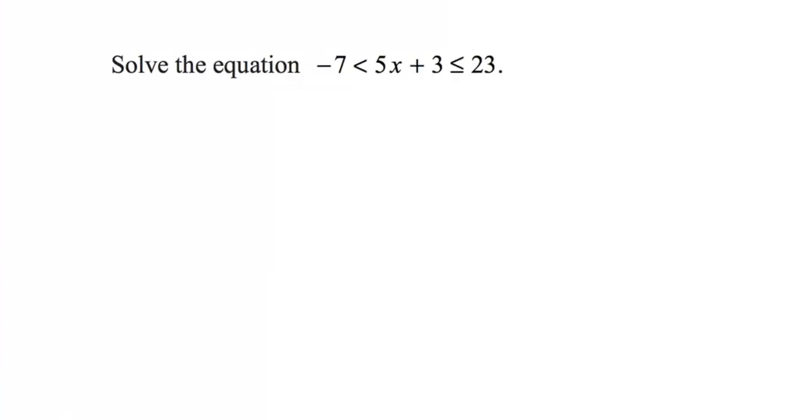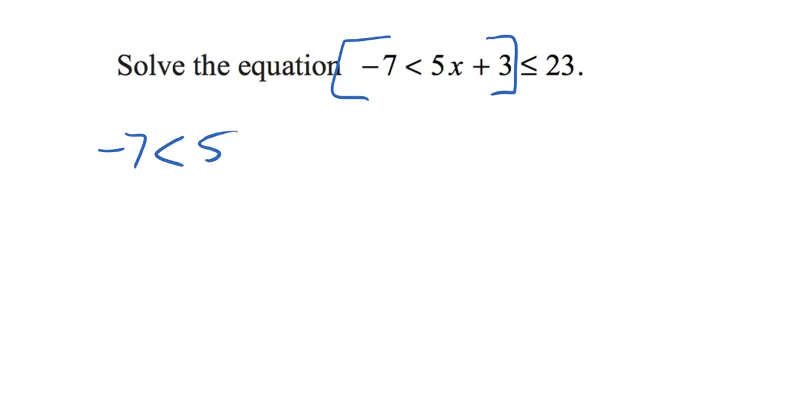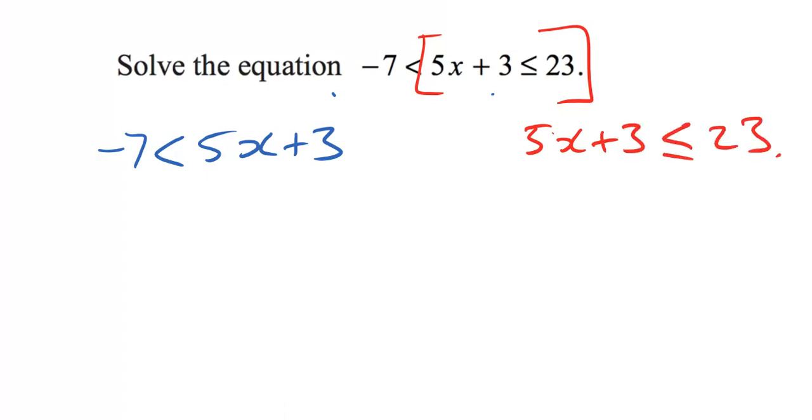This is a slightly more interesting example. We've got a couple of things we could do here. We could either treat it as an equation with three parts or we could do everything separately. So I could take this part of it and write minus seven is less than five X plus three like that and solve that one. Or alternatively, I could do exactly the same to this part of it, write my five X plus three over there. So let's do that and solve them separately and we'll try to bring them together at the end.